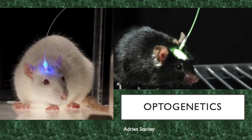Today I'm going to be talking about this really cool neuroscience technique called optogenetics. Optogenetics is really useful in neuroscience research because it allows you to determine the functions of different brain regions. I want to talk a bit about what has been done with optogenetics and also the potential clinical applications.